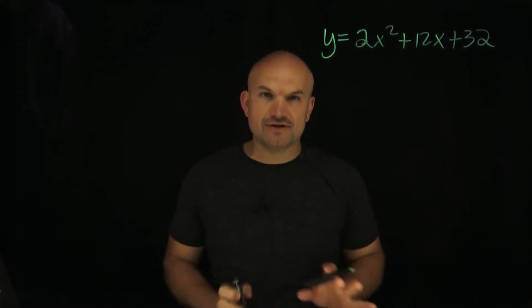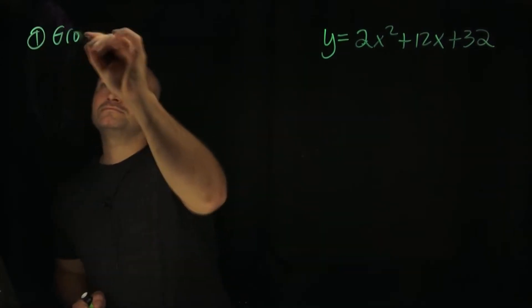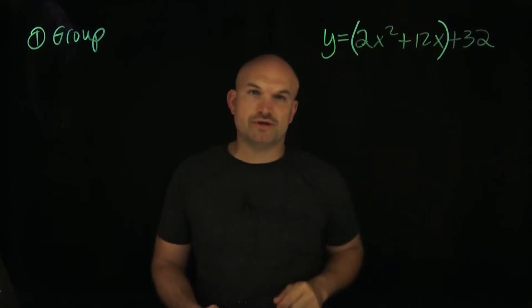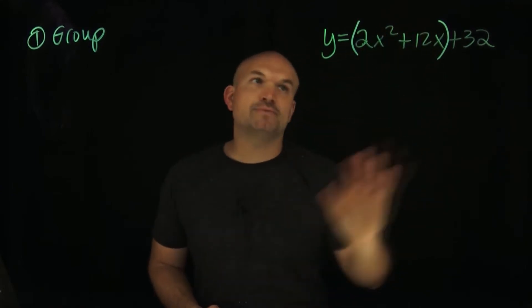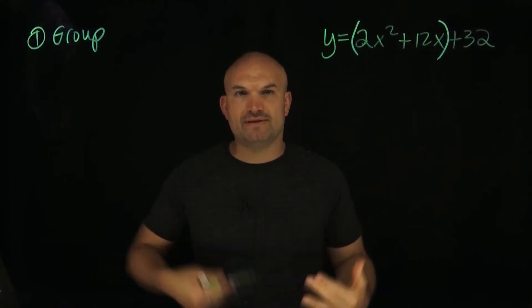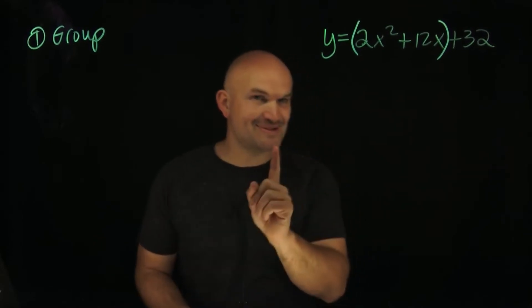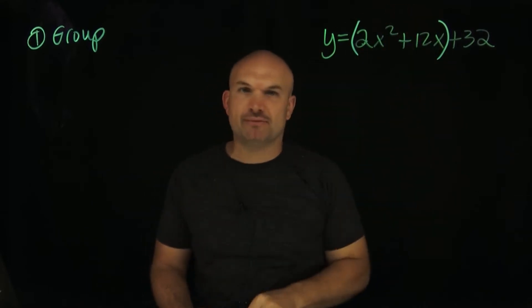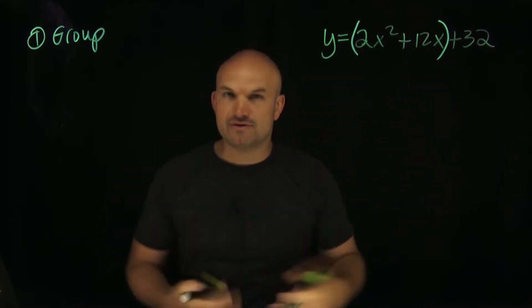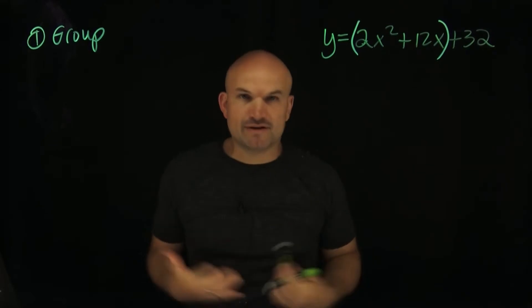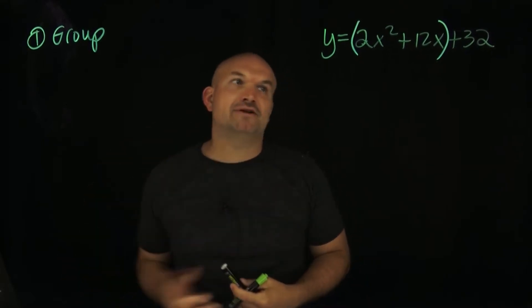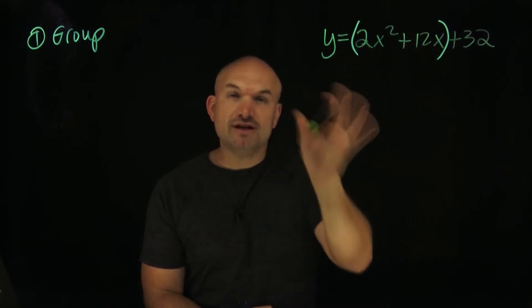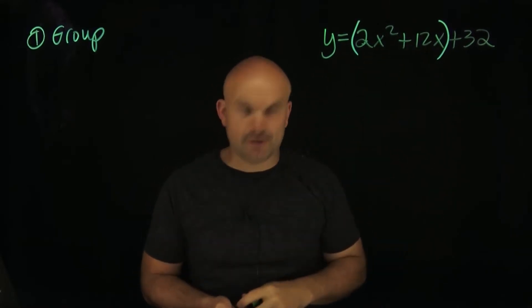So the first thing we always want to do is grouping. It's very important that you recognize I grouped the first two terms. The reason why I grouped those first two terms is that's going to help me with the factoring, which is going to be the next step. This tells me this is where I want to create that perfect square trinomial, because when we are completing the square, we're trying to create a perfect square trinomial that we can then factor down.